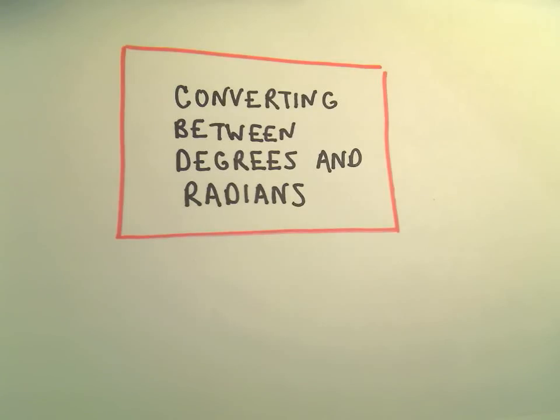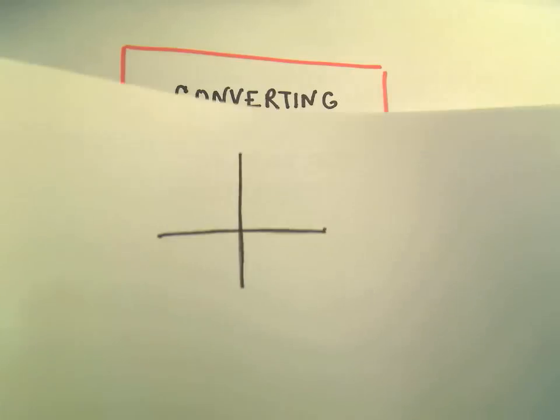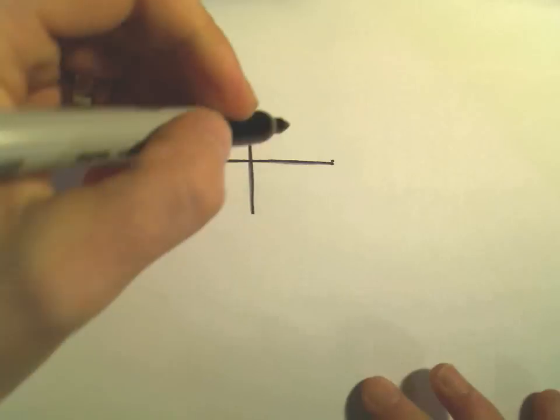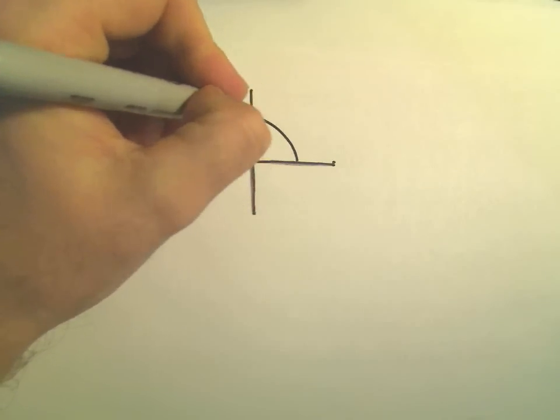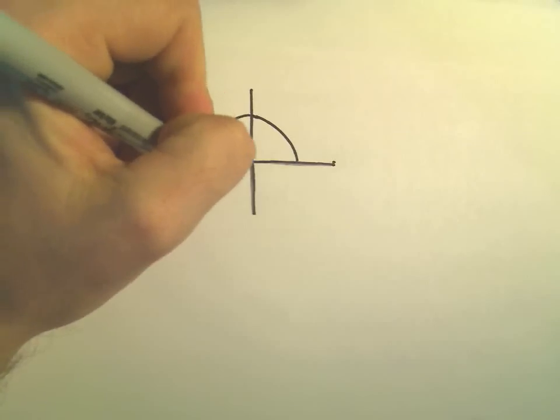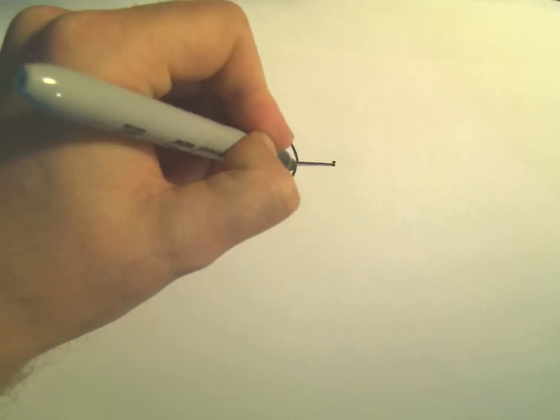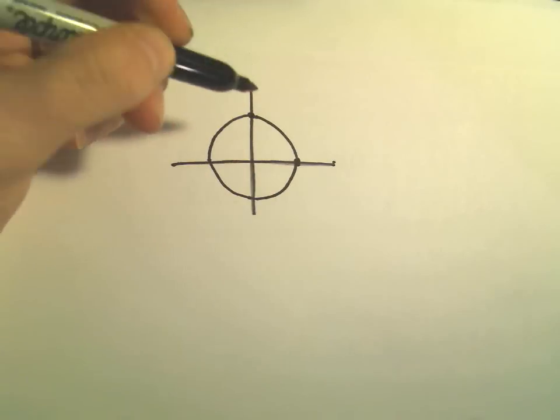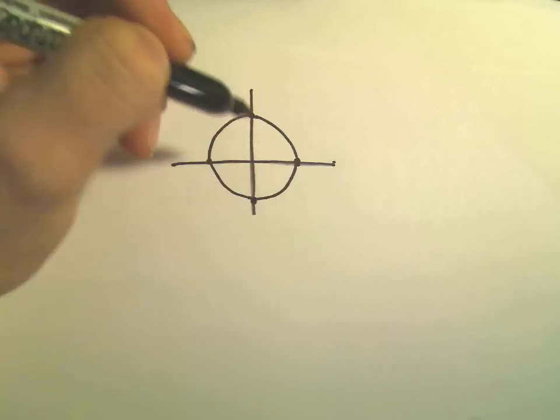In this video I want to talk about converting between degrees and radians, and there's kind of one thing I remember to help me get going on this stuff, just to remember some basic formulas to help me convert. So I think about a circle of radius 1, the unit circle.